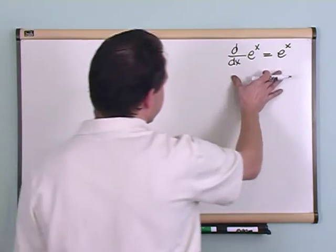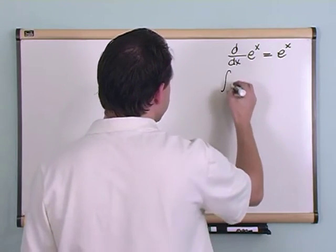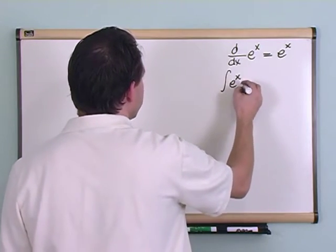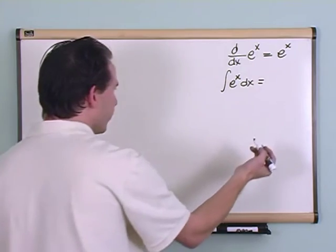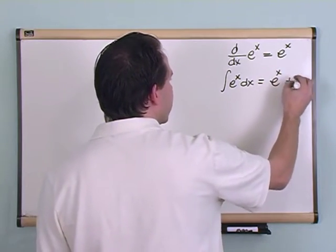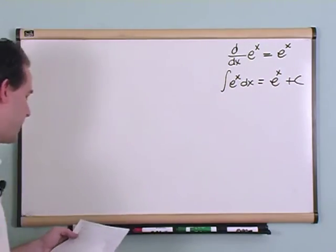Now because of this, the antiderivative of e to the x power dx, which is just the integral, is, you ready? Drum roll please. E to the x, but then of course you got this plus c hanging out, you always have to have.